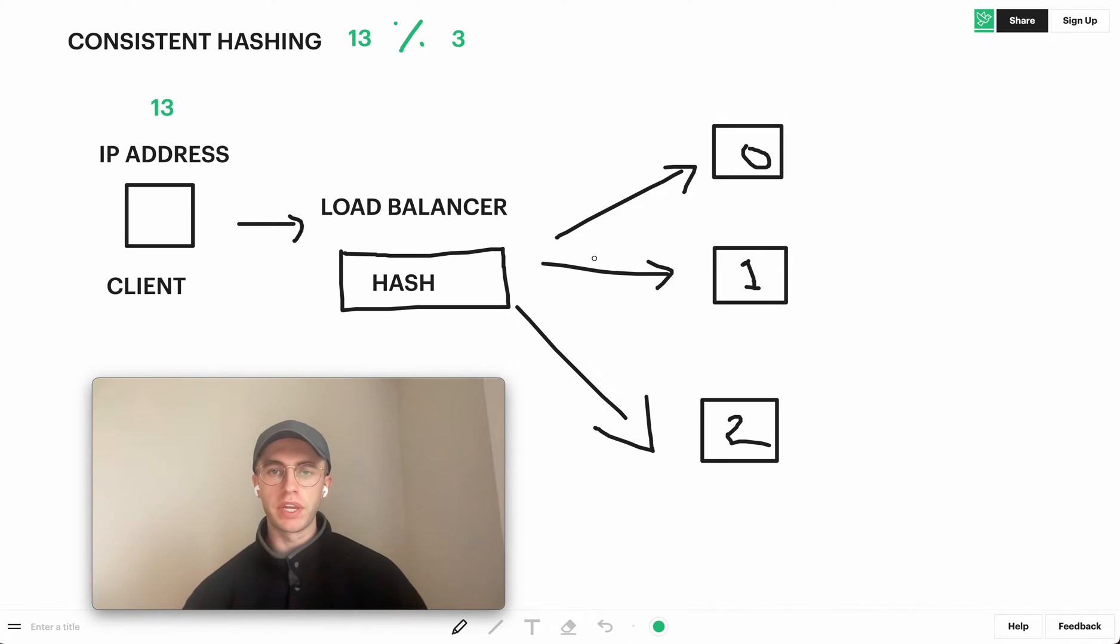If you have the IP address of 14, then it would get passed on to the second server. And if you had the IP address of 15 modded by 3, well that would get routed here.